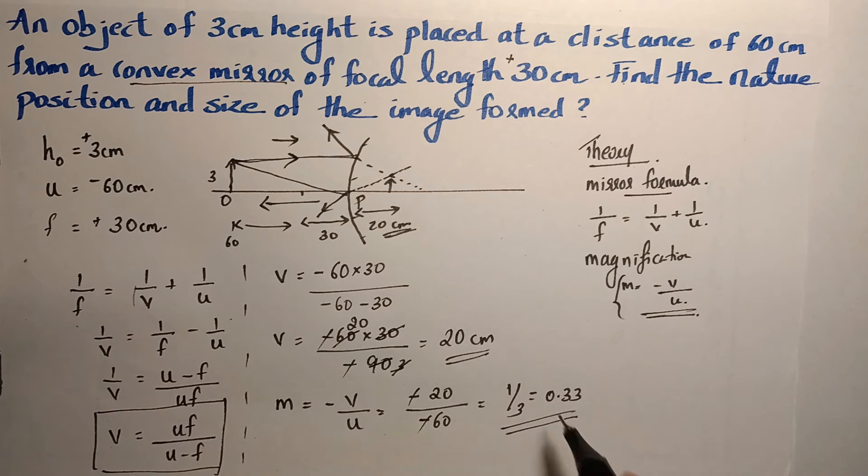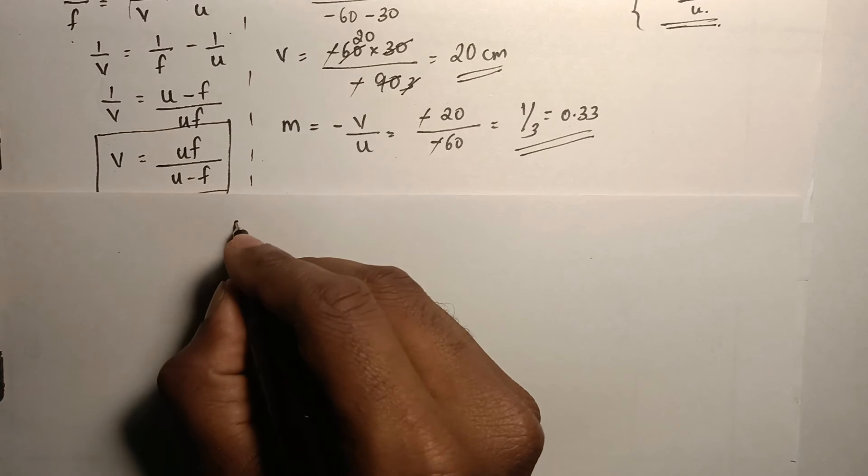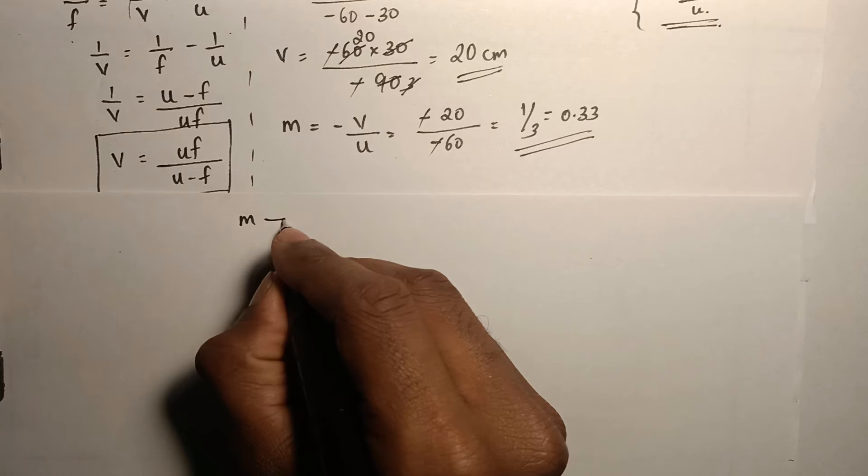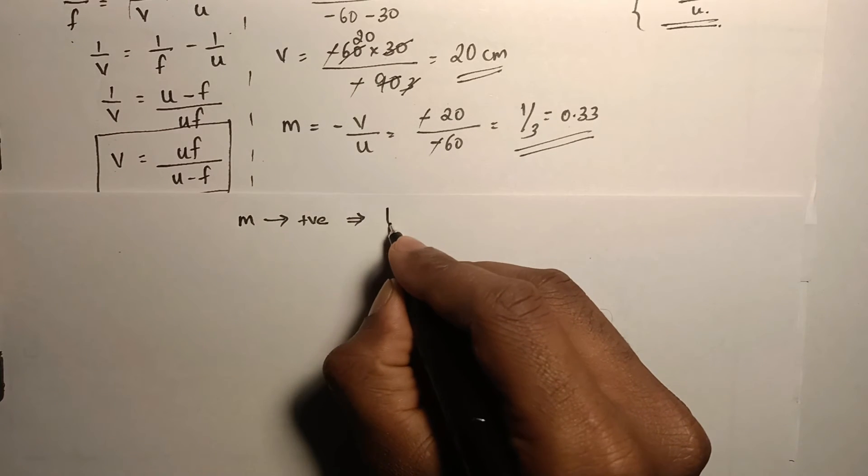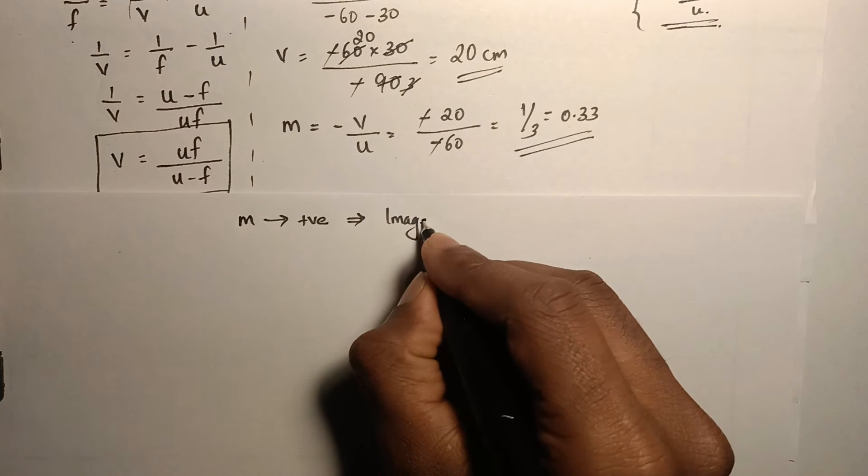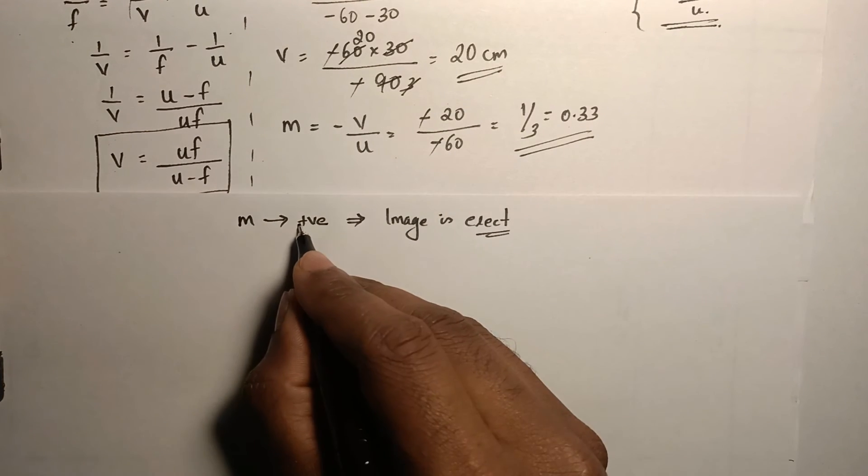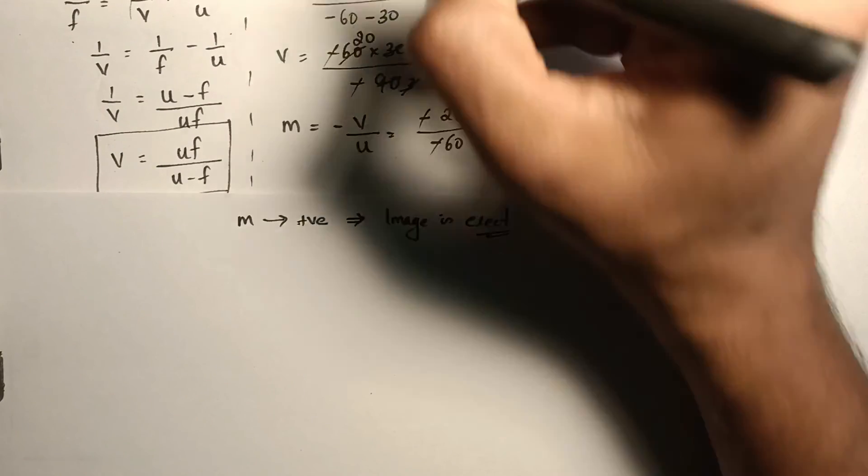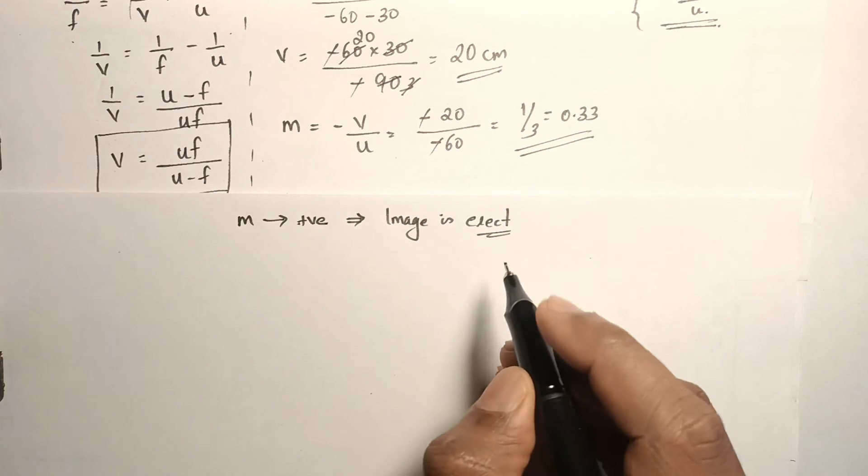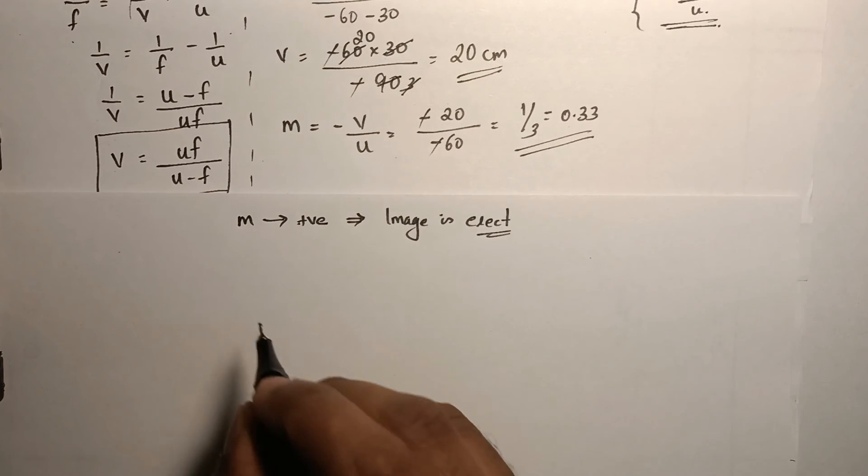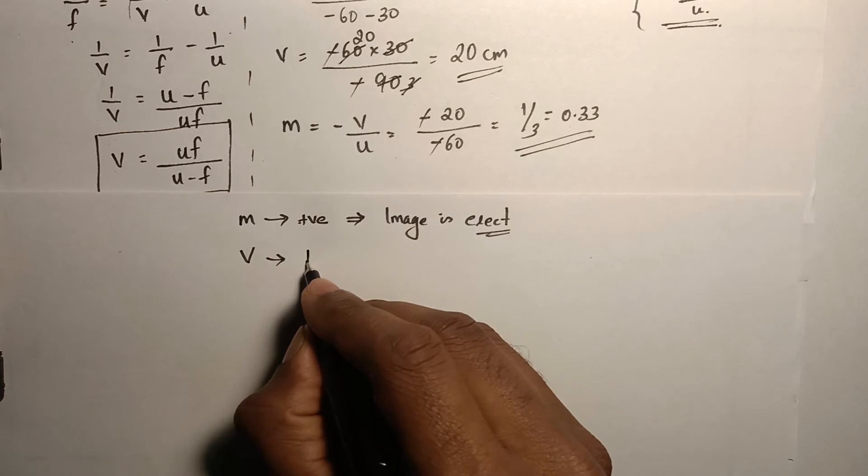From this, we can explain the nature of the image formed. Magnification is positive which implies that image is erect. If magnification is positive, the image is standing straight or erect or if the magnification is negative, it will be inverted. We got that it is erect.